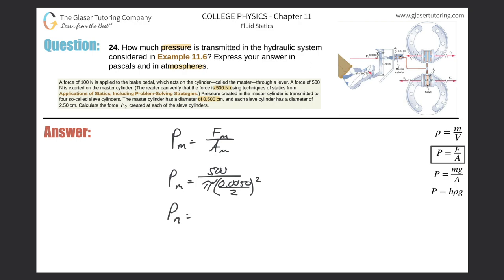The pressure created at the master cylinder is simply this calculation. So it's going to be 500 divided by pi times parentheses 0.005 over two, and square that. We get a value here of about 2.55 times 10 raised to the seventh pascals. So this is the pressure created by the master cylinder.